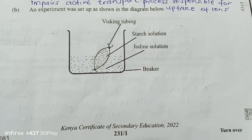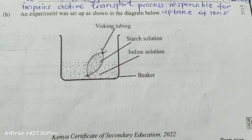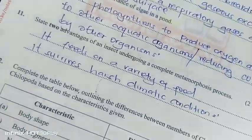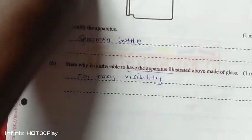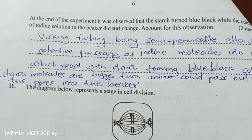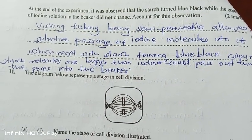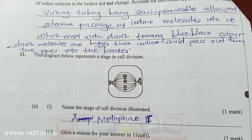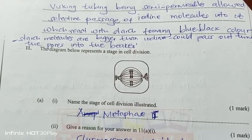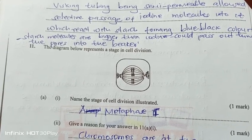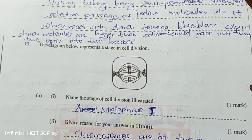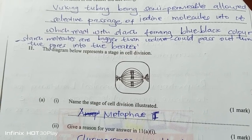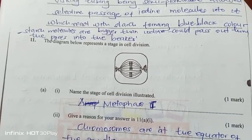An experiment was set up with visking tubing containing starch solution, placed in a beaker of iodine solution. At the end of the experiment, the starch turned blue-black while the iodine solution in the beaker did not change. This is because the visking tubing is semi-permeable, allowing iodine molecules to pass through and react with starch forming a blue-black colour, but starch molecules are too large to pass through the semi-permeable membrane.